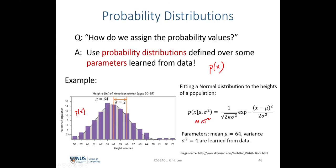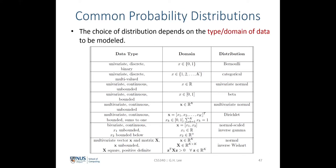We'll look at some common probability distributions used for discrete and continuous random variables. First, the Bernoulli distribution, which represents a single binary random variable X, where X takes a binary state of 0 or 1 — for example, flipping a coin where head is 0 and tail is 1.